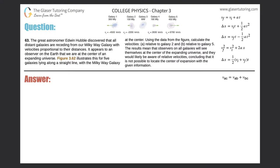Number 63. The great astronomer Edwin Hubble discovered that all distant galaxies are receding from our Milky Way galaxy with velocities proportional to their distances. It appears to an observer on the Earth that we are at the center of an expanding universe. Figure 13.62 illustrates this for five galaxies lying along a straight line with the Milky Way galaxy at its center.